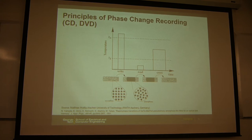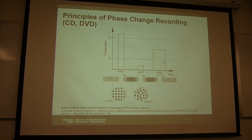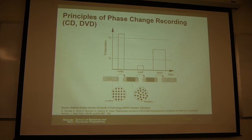That's the CD and DVD. If you want to switch the device from amorphous to crystalline, you apply a lower amplitude laser, which gradually heats the sample and recrystallizes it. This is the optical tuning of phase change material.